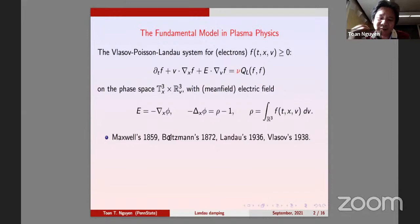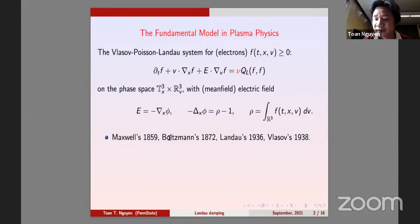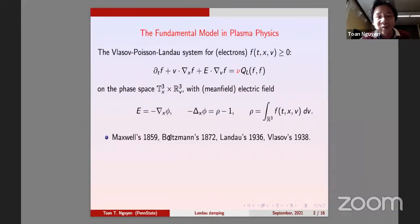Landau later corrected this for plasma, because for plasma, electrons interact through Coulomb potential — one over x — and with that Coulomb potential the Boltzmann collision operator diverges. So Landau replaced it with the Landau collision operator. Vlasov argued that for plasma, mean-field interaction is stronger than collisions.